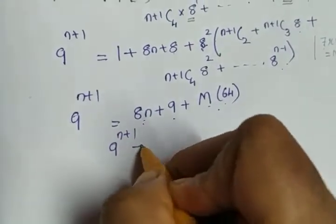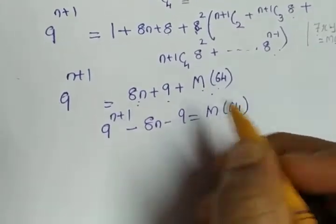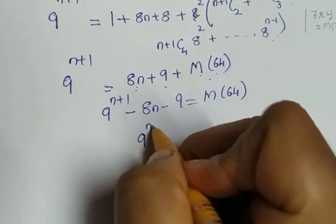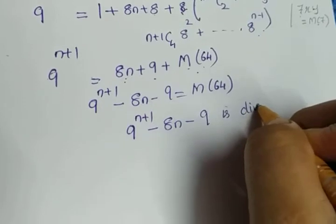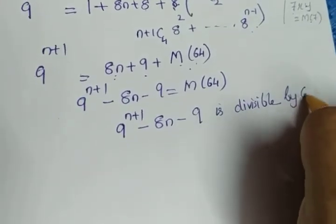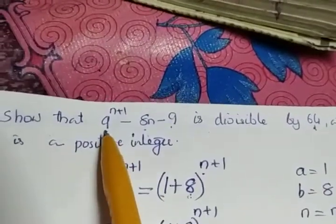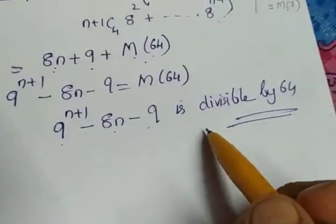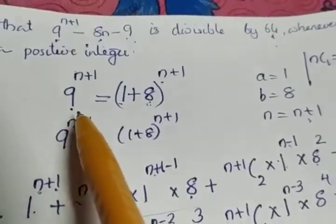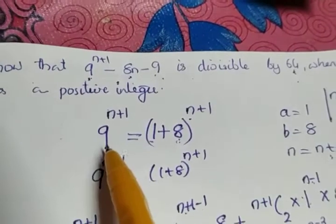Taking 8n and 9 to the left side: 9 raised to n+1 minus 8n minus 9 = multiple of 64. In other words, 9 raised to n+1 minus 8n minus 9 is divisible by 64. This is exactly what we had to prove — the expression matches the question: 9 raised to n+1 minus 8n minus 9 is divisible by 64.